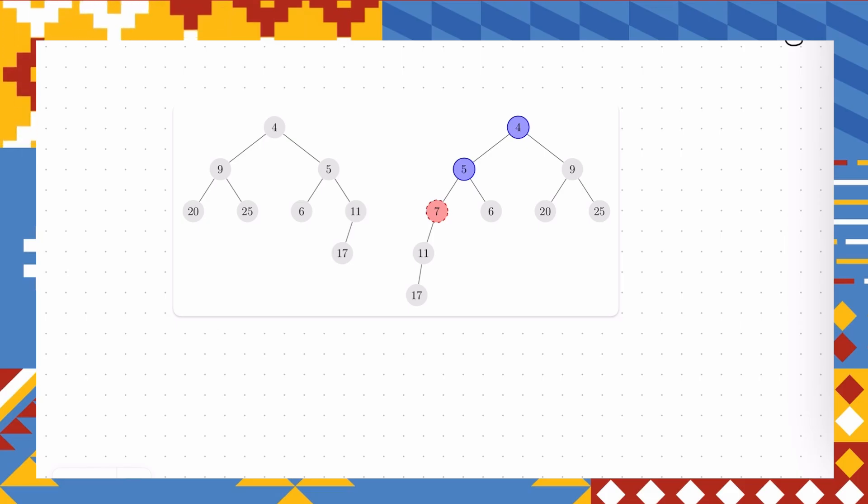This problem is about a data structure named skew heap. Let's first talk about what this data structure is. A heap is a tree where each node has a value bigger than its children.